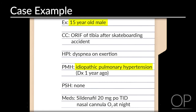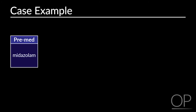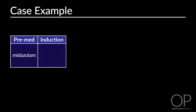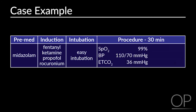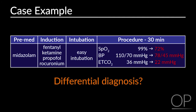Back to our sample case — a 15-year-old male with pulmonary hypertension for ORIF of his tibia. The patient received a pre-med of midazolam, and induction used a balanced anesthetic technique with fentanyl, ketamine, propofol, and rocuronium. The patient remained hemodynamically stable on induction and had an easy intubation. However, 30 minutes after incision, the patient suddenly had a decrease in oxygen saturation, blood pressure, and end-tidal carbon dioxide. What is your differential diagnosis and how will you treat this patient?